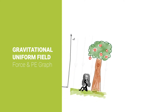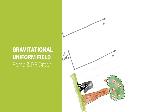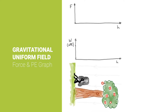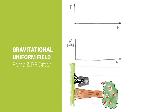We're going to look at a gravitational uniform field example, and specifically at a force versus potential energy graph. Let's have a look at Newton sitting under his apple tree — we're going to twist gravity so that it's acting towards the left. Gravity is a bit strange in this example, but it helps when we draw our force diagram and potential energy diagram. The force at any point in space is going to be the same on that apple, equal to mass times the gravitational field strength, so we draw the force graph as a uniform constant graph.